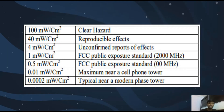Safety guidelines for exposure of the public to RF radiation from transmitting antennas are set by different organizations all over the world. These standards are expressed in power density in milliwatts per centimeter squared. The table shows the amount of power density that would cause harmful effects: at 4 mW/cm², only unconfirmed reports of effects had been recorded; at 40 mW/cm², reproducible effects can be noticed; and at 100 mW/cm², a clear hazard can be seen.